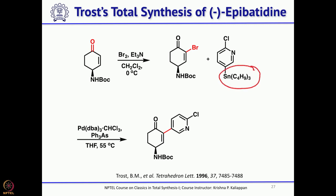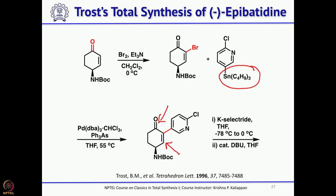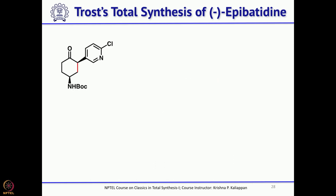Once the azide was in place, it was easily hydrolyzed using Staudinger reaction conditions, followed by protection as a Boc derivative by treating with Boc anhydride. The benzoate was hydrolyzed and followed by oxidation to give the 4-substituted cyclohexenone. Bromine was introduced at the alpha position — required for the Stille coupling — using bromine and triethylamine. Stille coupling with the stannyl derivative gave the key precursor. K-Selectride reduced the conjugated double bond, then epimerization with catalytic DBU gave only one isomer.